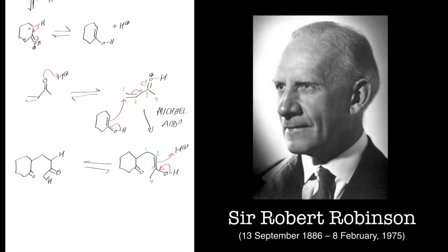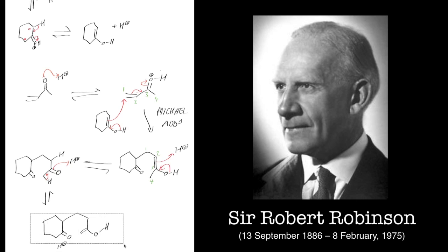The next stage is to form the other enol on the other side — basically putting the double bond on this side. It seems a bit long-winded, but this is what enol chemistry is all about: whizzing electrons backwards and forwards between the alpha positions and the ketone. The next step is to form this enol, which is a very important part. We number it one, two, three and put the double bond in, giving us the new enol form.